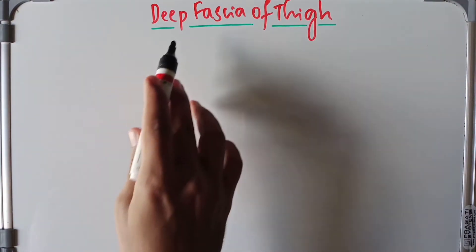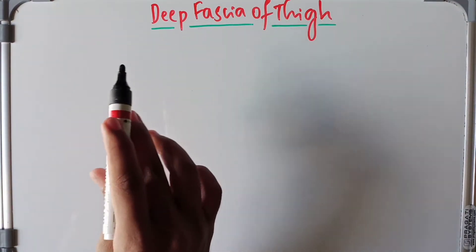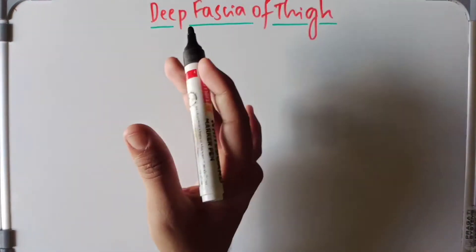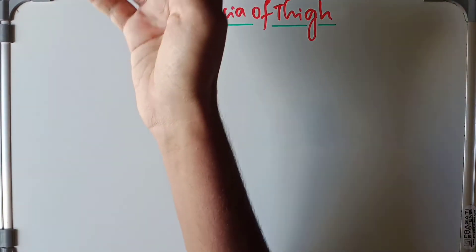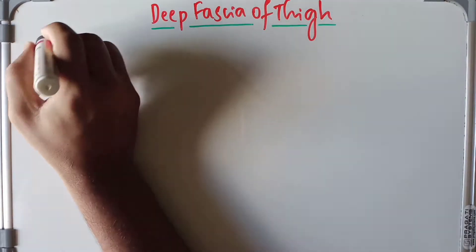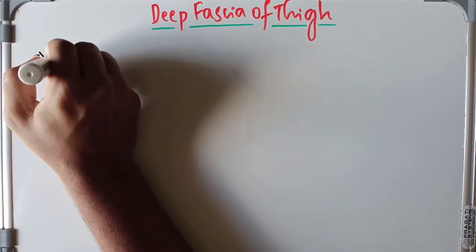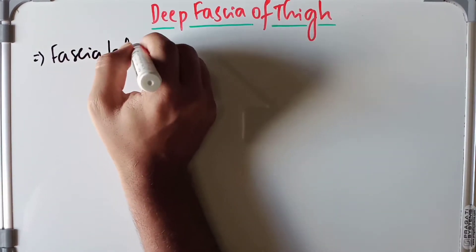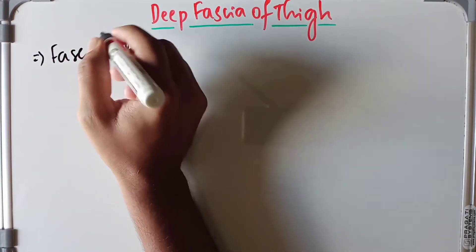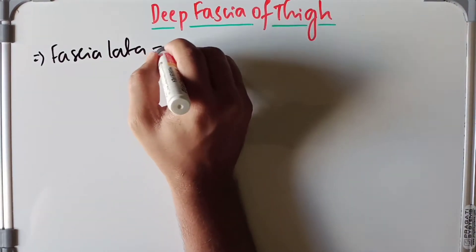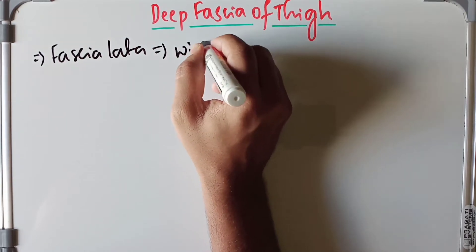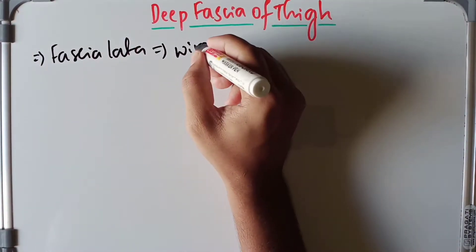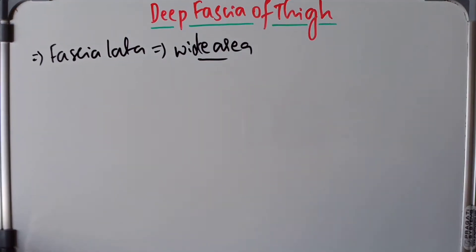Today we are going to learn about the deep fascia of the thigh. The deep fascia of the thigh is very strong and it envelops like a sleeve on the thigh. This is also called the fascia lata — it is a very common name for this fascia. It is called the fascia lata because it encloses a wide area on the thigh like a sleeve.